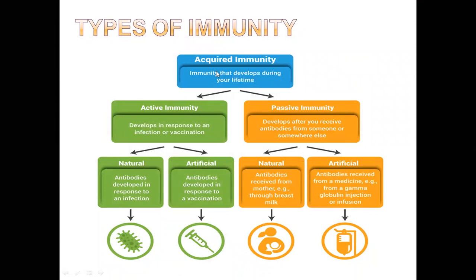We have two types of immunity: active immunity and passive immunity. In active immunity, an antigen or pathogen enters your body and your immune system is directly exposed to that antigen, producing antibodies and memory cells. In passive immunity, your immune system is not directly exposed to the pathogen — instead, antibodies developed in another organism are received by you. Active immunity lasts a long time because memory cells are produced, while passive immunity lasts only a short time because no memory cells are produced.